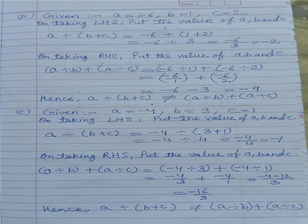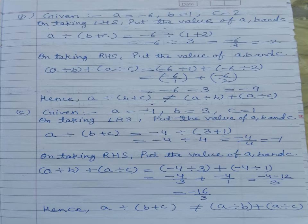Part b: given A equals minus 6, B equals 1, and C equals 2. On taking the left-hand side: A divided by (B plus C) equals minus 6 divided by (1 plus 2) equals minus 6 upon 3 equals minus 2. On taking the right-hand side: A divided by B plus A divided by C equals minus 6 divided by 1 plus minus 6 divided by 2 equals minus 6 plus minus 3 equals minus 9. Left-hand side is minus 2 and right-hand side is minus 9, so both are not equal. Hence A divided by (B plus C) is not equal to A divided by B plus A divided by C.